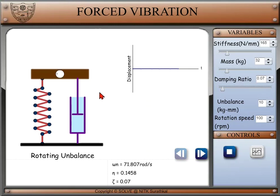We have graph plot of displacement versus time. Below, we can see natural frequency omega n, frequency ratio eta that is ratio of operating frequency to natural frequency, damping ratio zeta.